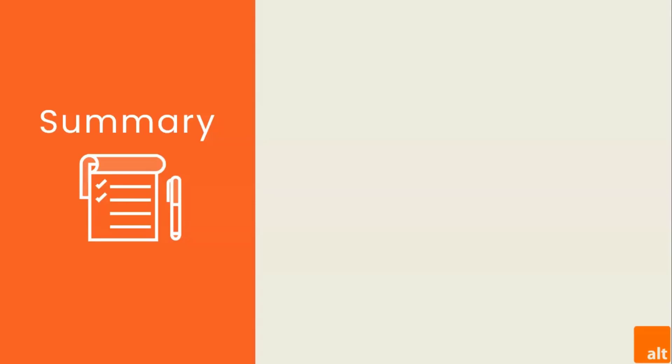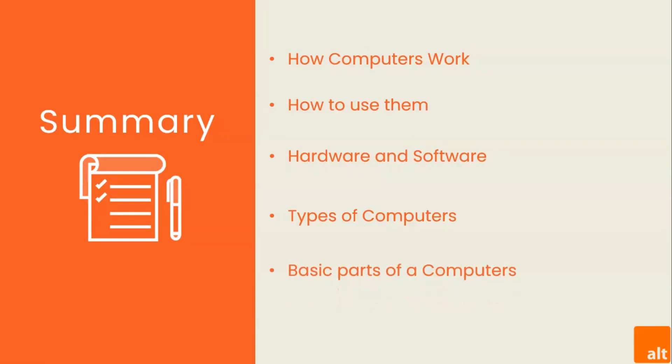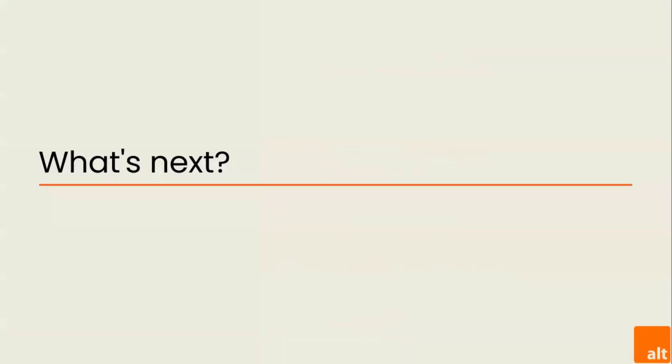During this lecture, we explored how computers work and how to use them. We explored hardware and software as the two main components that every computer has or should have. We also explored the types of computers, including desktop, laptop, tablets, servers, wearables, etc. And we spoke about some basic parts of a computer, including the keyboard, the mouse, and more.